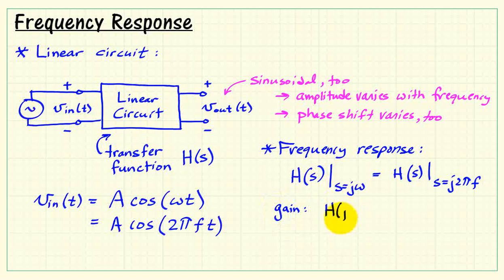This gain that causes the amplitude to vary with frequency then can be written as the magnitude of the frequency response. And the phase shift can be expressed as the angle of that complex value.